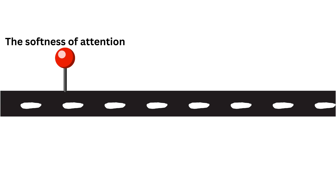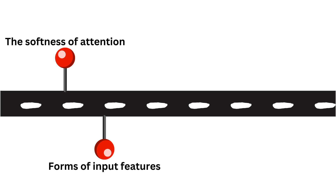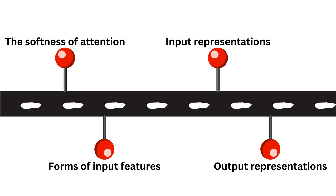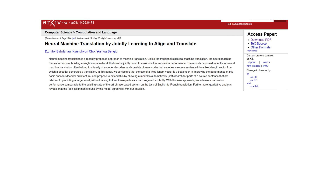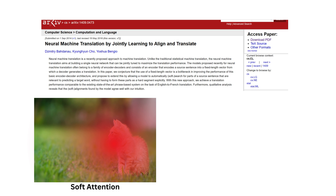Attention mechanism approaches can be grouped based on four criteria: the softness of attention, forms of input features, input representations, and output representations. The concept of softness of attention, also known as deterministic attention, was introduced by Bahdanau et al. in their paper titled 'Neural Machine Translation by Jointly Learning to Align and Translate.' This approach considers all input elements to compute the final context vector, a high-dimensional representation of the input elements or sequences. The overarching goal is to infuse more contextual information into the computation of the final context vector.